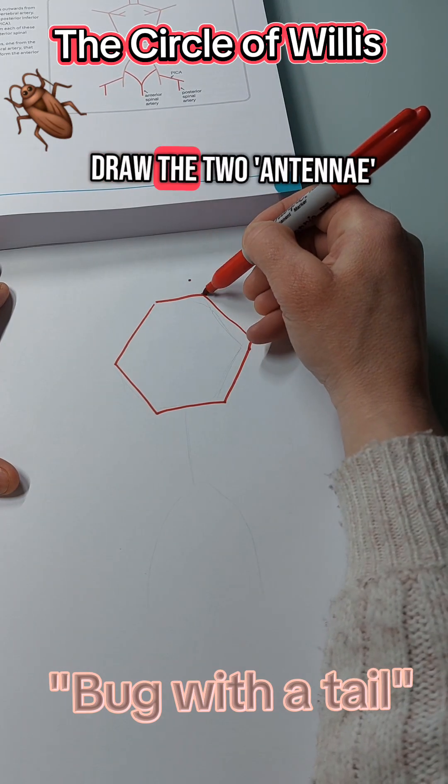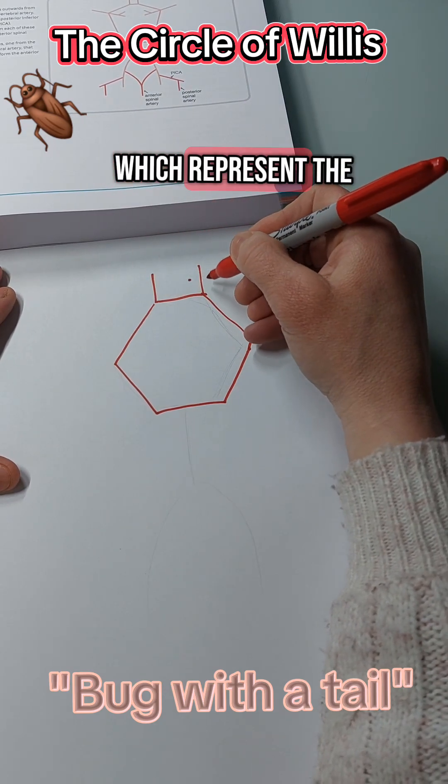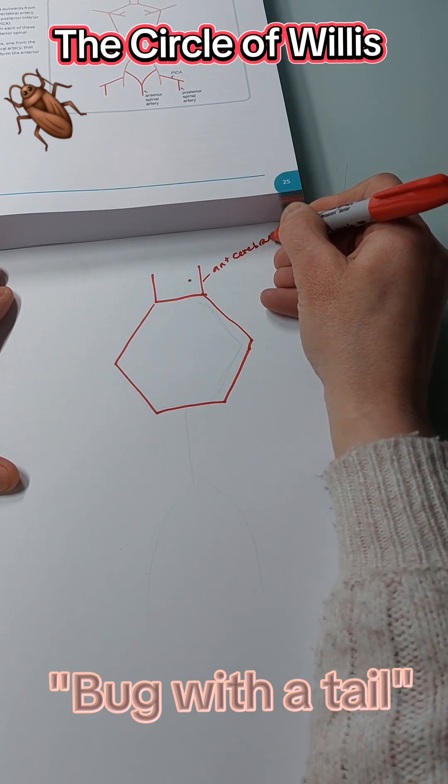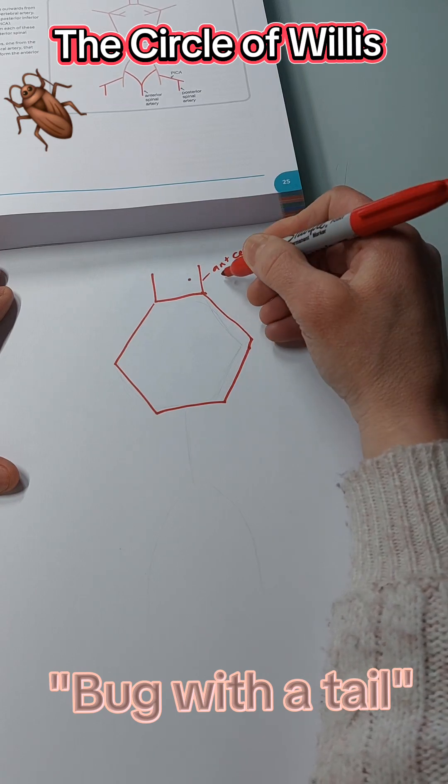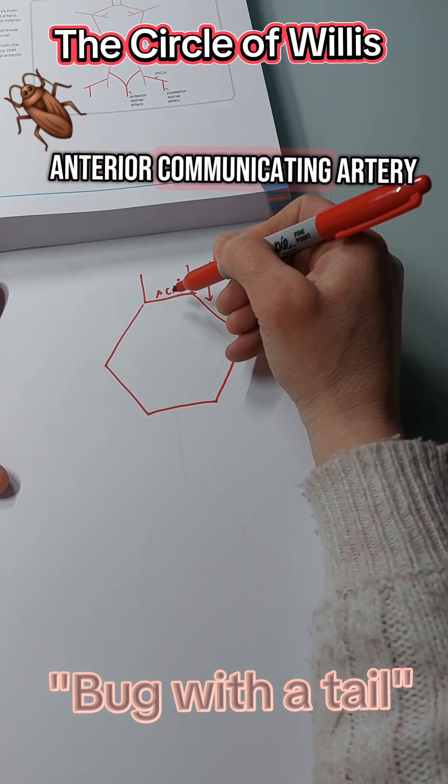And then I draw the two antennae, which is the anterior cerebral artery. And then this one here between them is the anterior communicating artery.